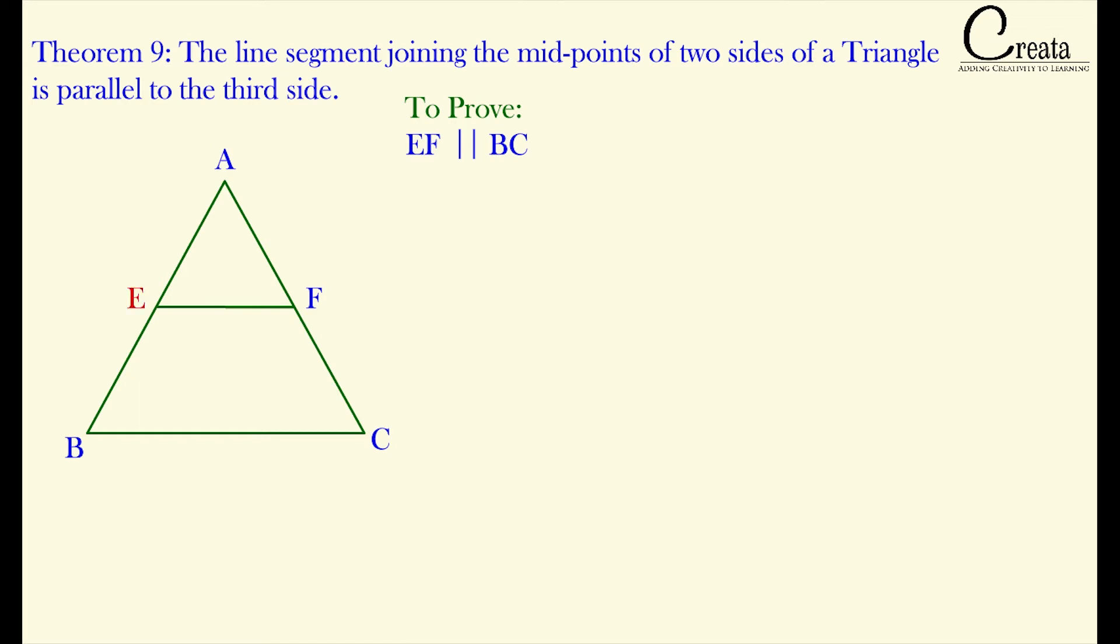So we have got point E as midpoint of AB that is AE is equal to EB and F is the midpoint of AC that is AF is equal to FC.